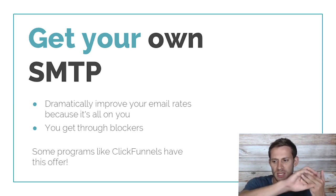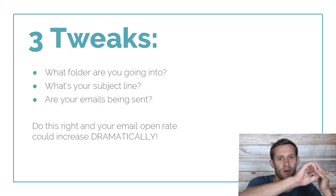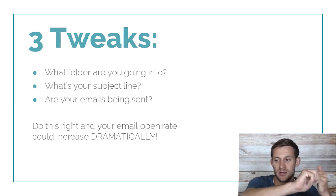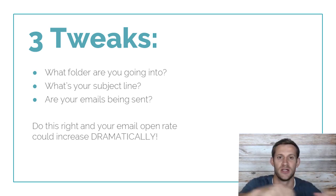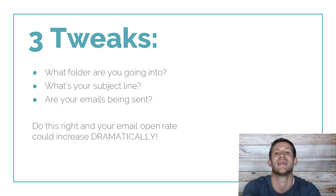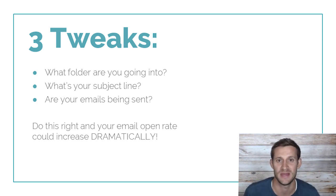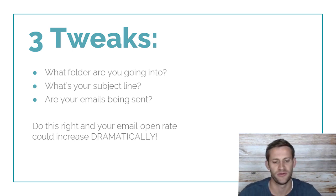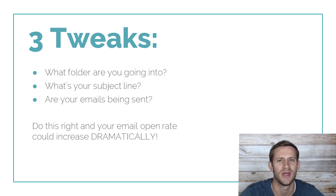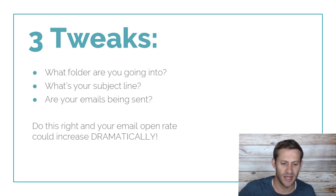So three things again: you've got to figure out what folder your emails are going into, you've got to figure out what your subject line is lacking, and then deliverability — are you even getting through the email blockers? Those three things can drastically improve your email open rates.